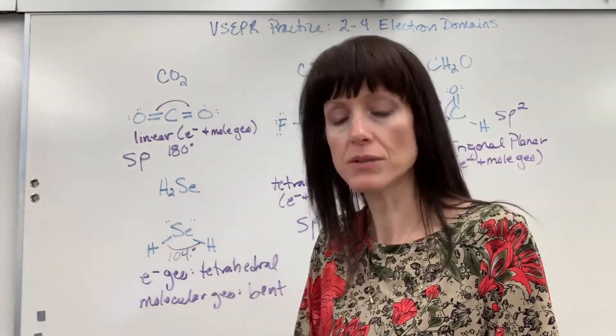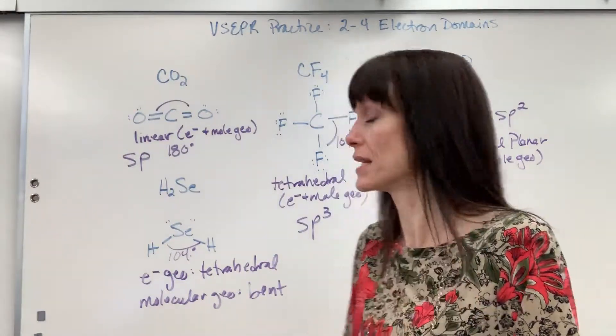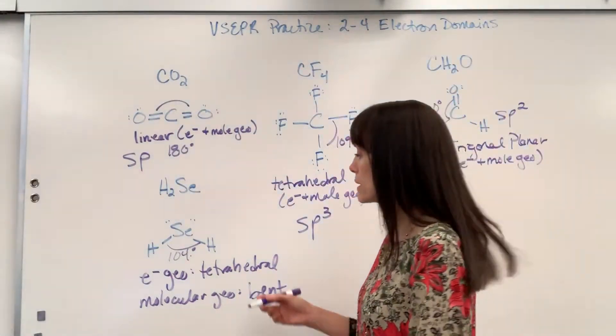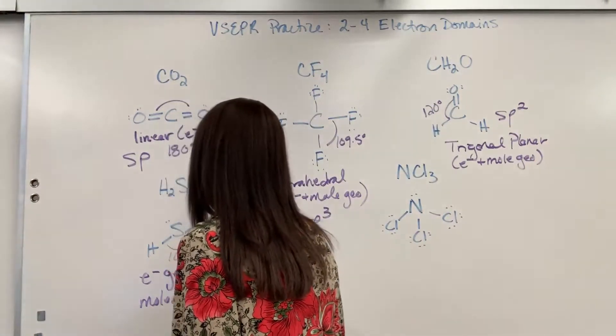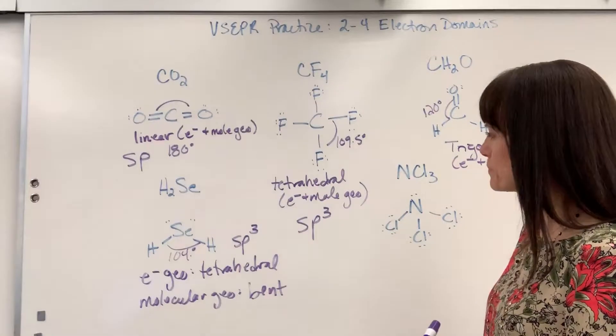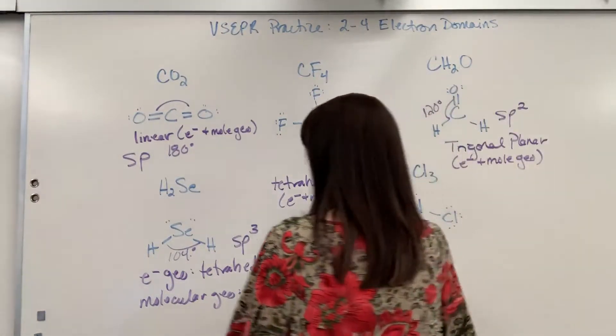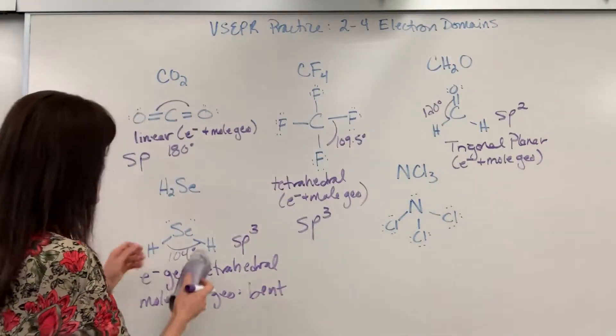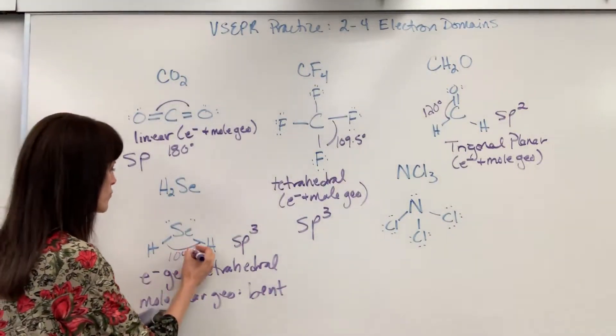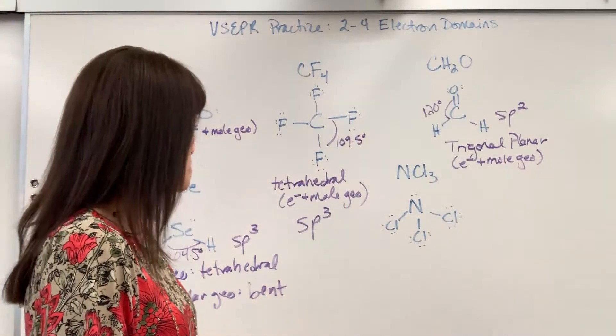Now hybridization. It doesn't matter if it's a bond or a lone pair. You still just count total electron domains to get the hybridization. And so this hybridization is an SP3. Okay, let's go to our nitrogen trichloride right here. And I forgot, I want to put the 104.5.